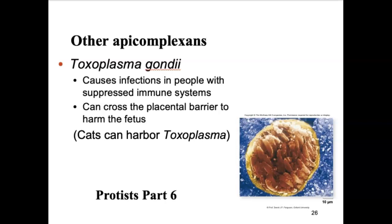In the last lecture, we talked about the apicomplexans, which are a group that sits underneath the alveolata based upon that key feature. All members of alveolata have that apex, that point in that alveola — that's the key feature. The apicomplexans just use theirs to penetrate into the host.